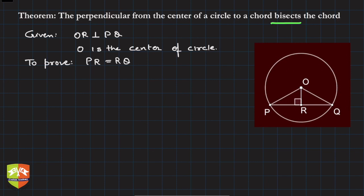How to prove? Proof is very straightforward. We know that we have to use something called congruence of triangles, which we have studied. We have to basically prove that PR is equal to RQ.